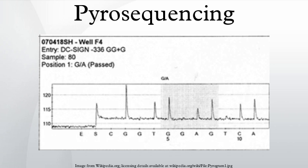Procedure: Sequencing by synthesis involves taking a single strand of the DNA to be sequenced and then synthesizing its complementary strand enzymatically. The pyrosequencing method is based on detecting the activity of DNA polymerase with another chemoluminescent enzyme.